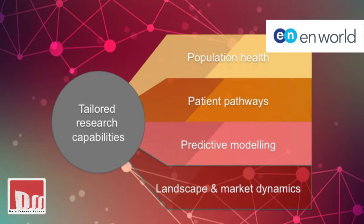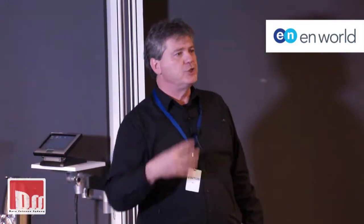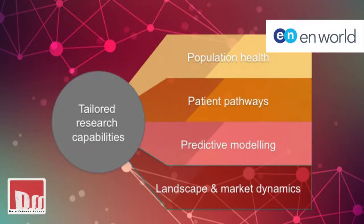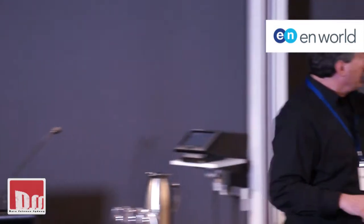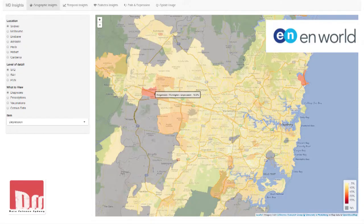I'm going to show you some stuff about population health and talk a little bit about patient journeys and patient pathways. This is the proof of concept I was talking about. What you're looking at at the moment is a map of the Sydney area. I might just grab the laser pointer so I can point at things.